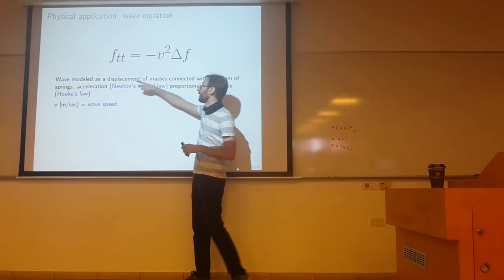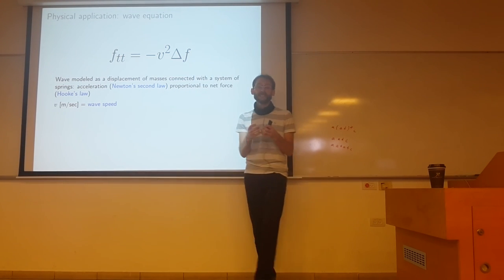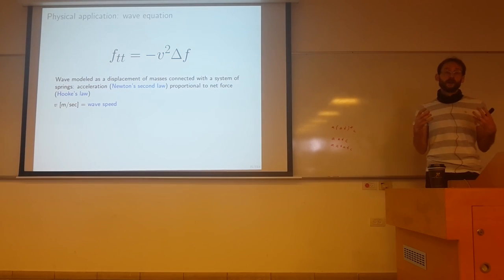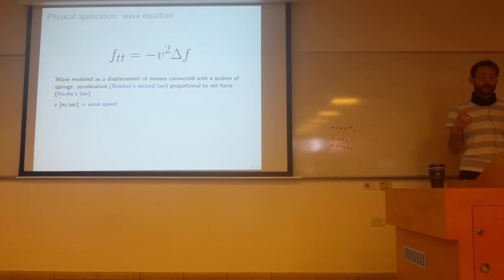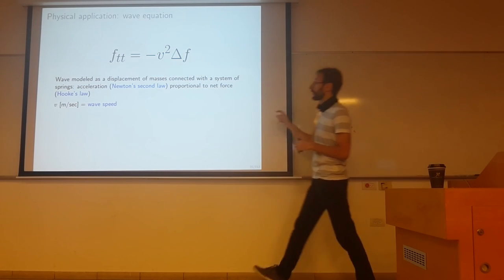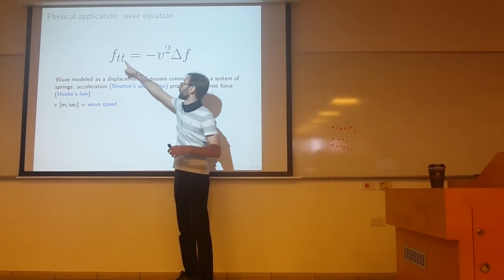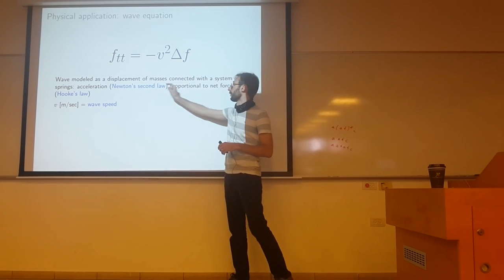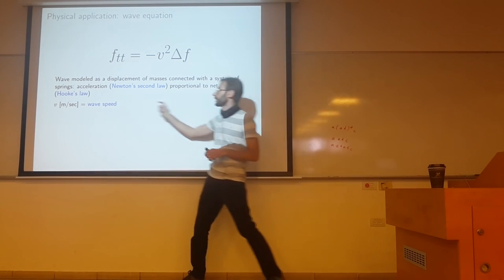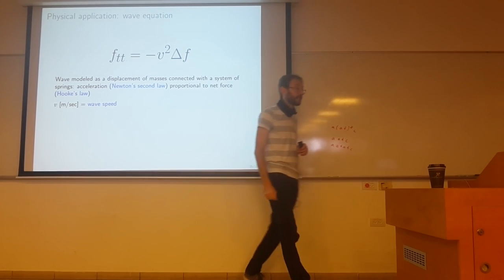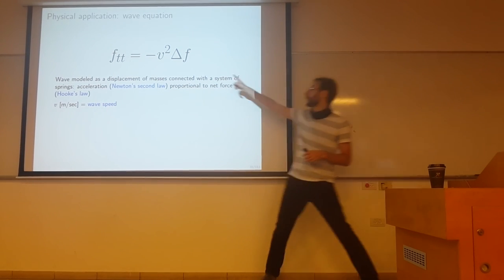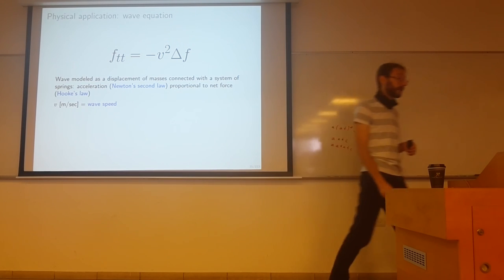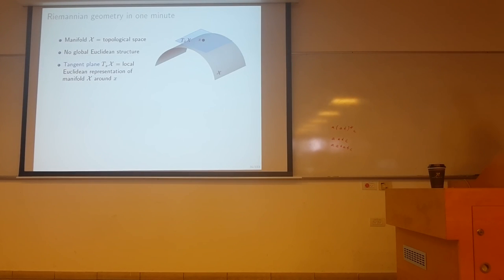Another example, wave equation. So here, the wave is modeled as a displacement of masses connected with the system of springs. Okay? Basically, what is written is a kind of equilibrium of forces. So basically, we have the acceleration, which is the second temporal derivative of F, and by Newton's second law, it's proportional to the net force, that is, in this case, expressed by Hooke's law, that covers the behavior of springs. And you can write it in this way. V, in this case, is the wave speed.